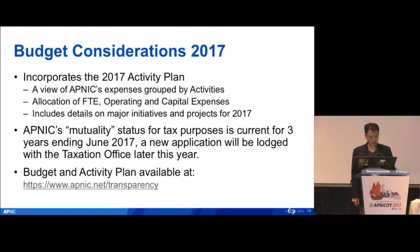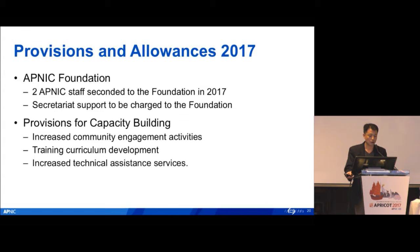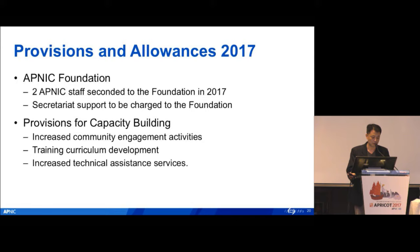Budget and activity plan are available at APNIC.net/transparency. Our provisions and allowances for 2017 include setting up the APNIC Foundation, providing two APNIC senior staff to the foundation in 2017 and secretarial support to be charged to the foundation. Provisioning for capacity building also includes increased community engagement activities, training, curriculum development, and increased technical assistance services.